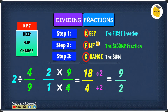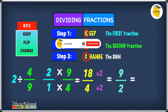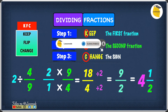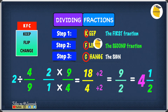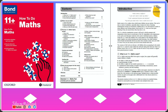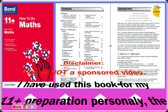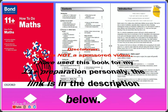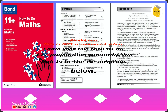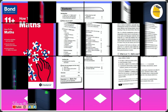9 over 2 as a mixed number is 4 and 1 over 2. So the answer to this question is 4½. If you want to know more about fractions, I've got a link in the description below and in the comments section, so go check that out.